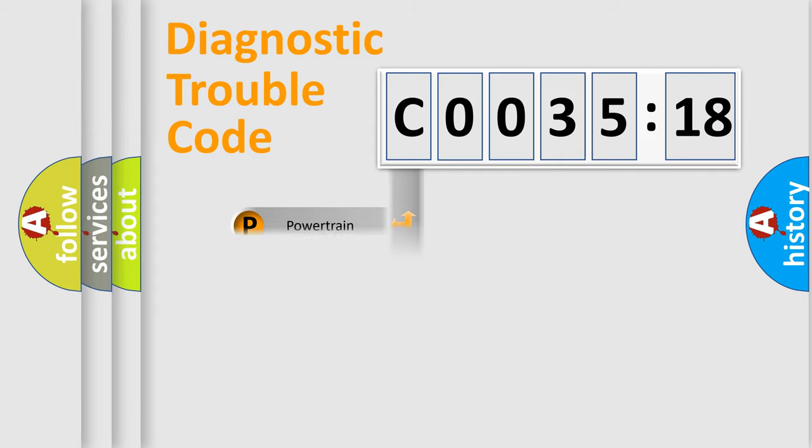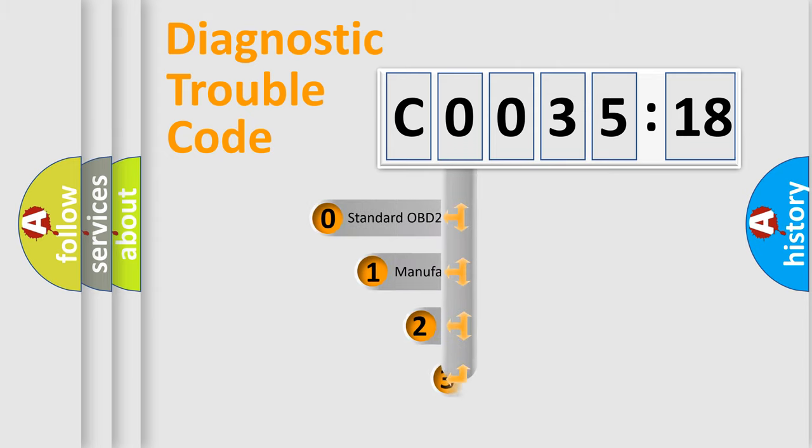Powertrain, Body, Chassis, Network. This distribution is defined in the first character code.